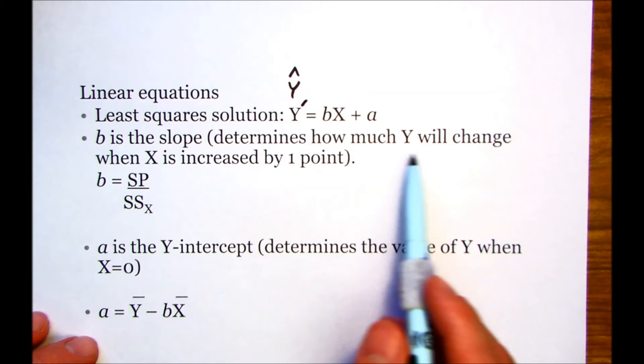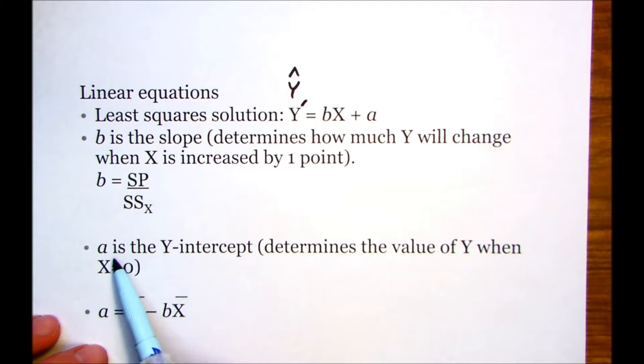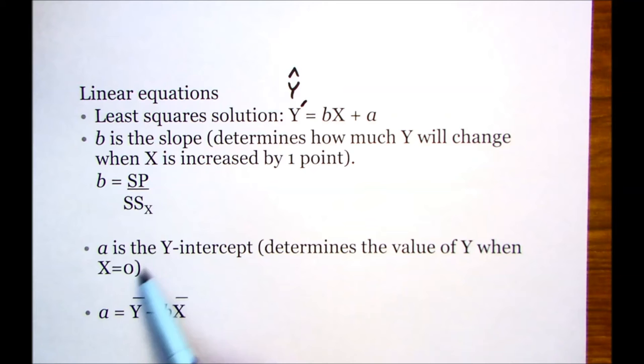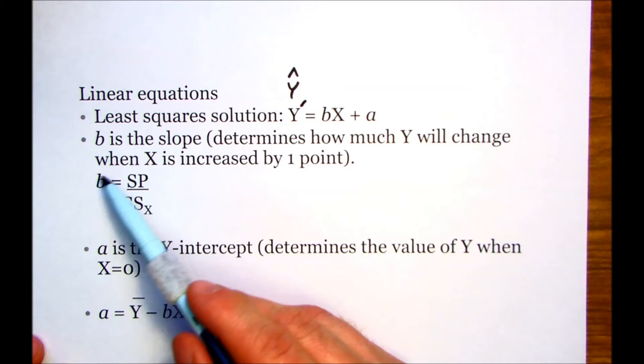As a reminder, the slope just determines how much y will change when x is increased by one point. And then a is just the y-intercept. That determines the value of y when x equals zero. Sometimes this is theoretical. There's times where x can equal zero. If it's an SAT score and that was your x, you can't even score a zero on the SAT. So at times that can be theoretical.